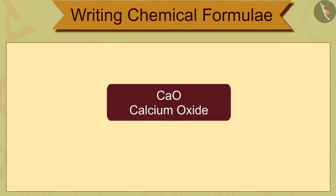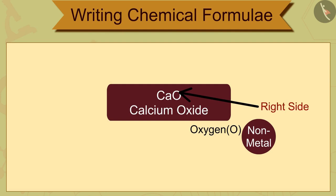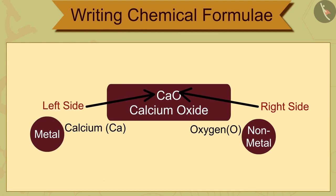calcium oxide, CaO, where oxygen is non-metal and is written on the right, whereas calcium is metal and is written on the left.